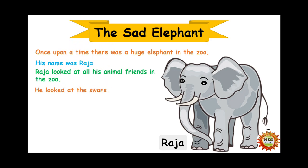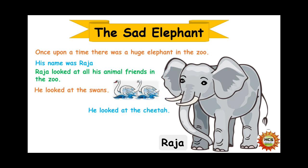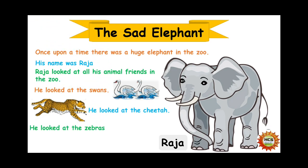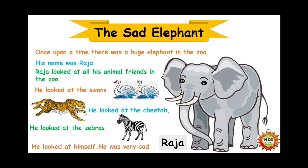He looked at the swans. Then he looked at the cheetah. And he looked at the zebras. And then he looked at himself — he was very sad. Who was sad? The elephant. Raja was very sad.